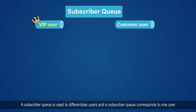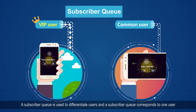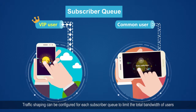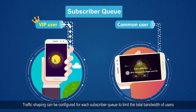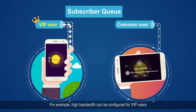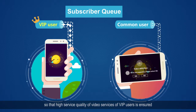A subscriber queue is used to differentiate users, and a subscriber queue corresponds to one user. Traffic shaping can be configured for each subscriber queue to limit the total bandwidth of users. For example, high bandwidth can be configured for VIP users so that high service quality of video services of VIP users is ensured.